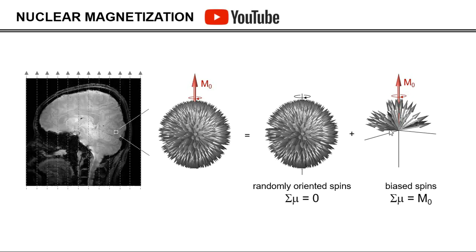Now, it is this M0 that is the NMR signal. However, it is almost never observed this way, because there are other sources of magnetization that are many orders of magnitude larger than the nuclear magnetization. Therefore, in NMR, we do a trick in which we rotate M0 towards the XY plane — the transverse plane — at which point it starts to rotate at a very unique and specific Larmor frequency, that is very easy to observe and very easy to distinguish from other sources of magnetization.